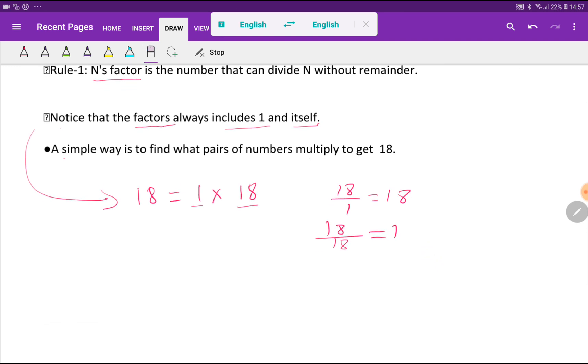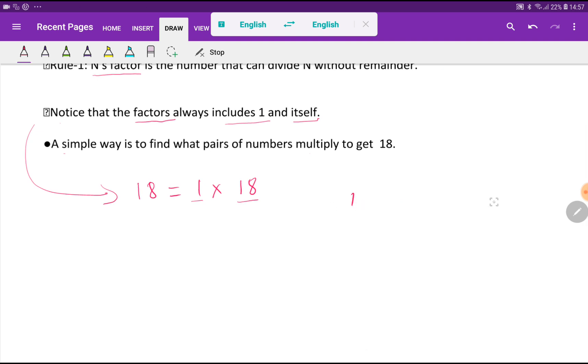So 1 and 18 are the two factors of 18. You have to write the lowest factor here, then the highest factor here. Now I will check for 2, whether 18 is totally divisible by 2 or not. If I divide 18 by 2, then I will get 9.